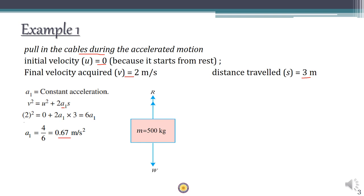Now we draw the free body diagram. The elevator has mass 500 kg, so weight W = mg acts downward. The tension in the cable acts upward, denoted as R. Acceleration A1 = 0.67 m/s² is upward. To bring this to dynamic equilibrium using D'Alembert's principle, we add an inertia force m·a acting downward, opposite to the acceleration.